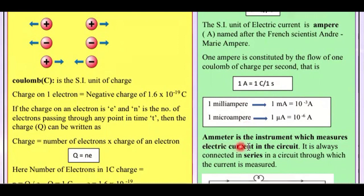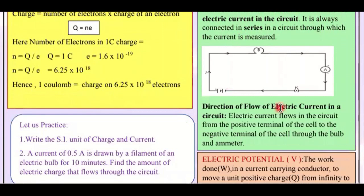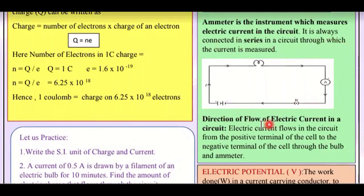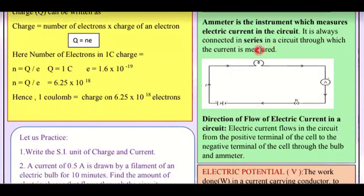Now, what is an ammeter? An ammeter is the instrument which measures electric current in a circuit. How much current is in a circuit is measured by an ammeter. The current's SI unit is ampere, and the instrument for it is also called ammeter. It is always connected in series — this is an important point to remember.